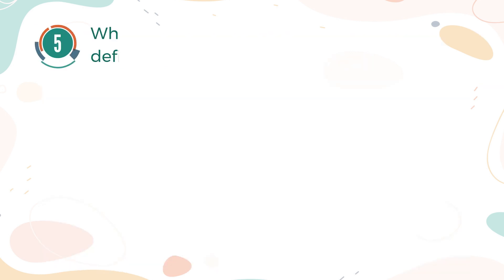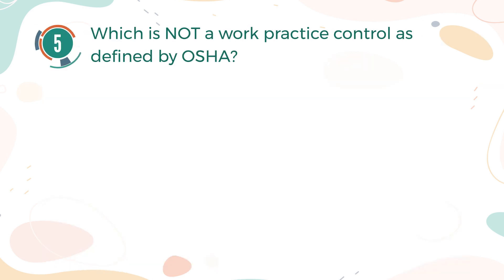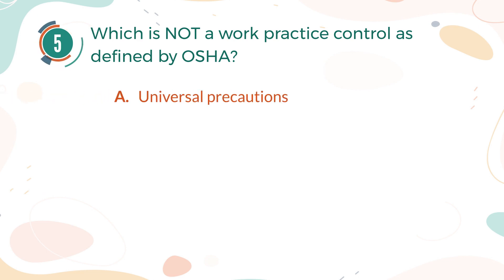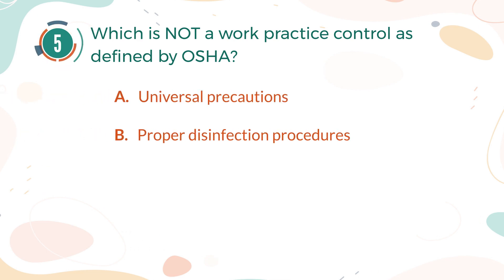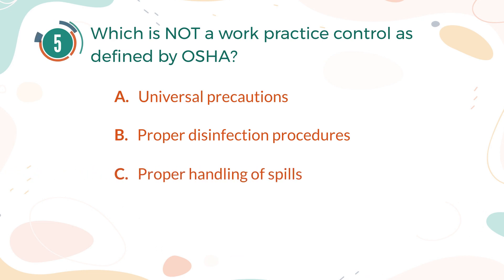Number 5. Which is not a work practice control as defined by OSHA? A. Universal precautions. B. Proper disinfection procedures. C. Proper handling of spills. D. Biohazard symbols.